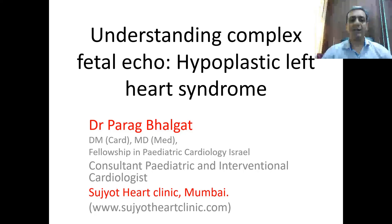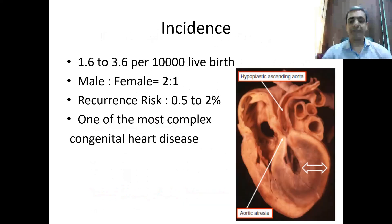Let's start with how to assess a fetal echo of hypoplastic left heart syndrome — what are the common features and how to come to a diagnosis. Hypoplastic left heart syndrome is one of the common complex heart anomalies, seen at an incidence of 1.6 to 3.6 per 10,000 live births, and it is more common in males.